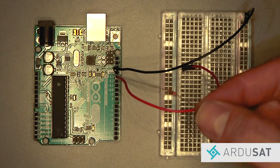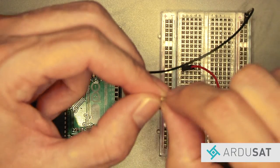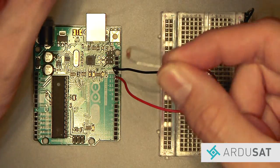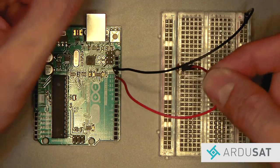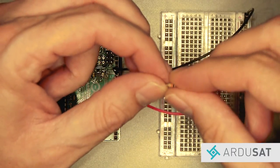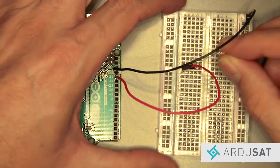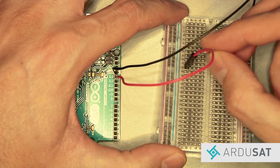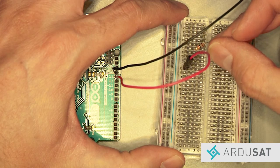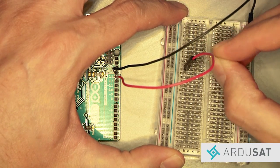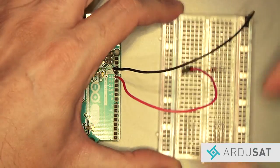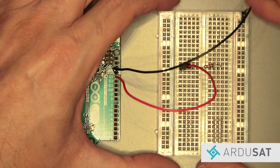Next take a resistor from your space kit and bend down both legs. With a resistor it doesn't matter which leg you connect to positive or negative. Plug one leg of the resistor into column E row 12 of the breadboard. Then take the other leg and plug it into column I row 12 of the breadboard.